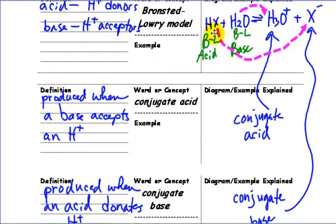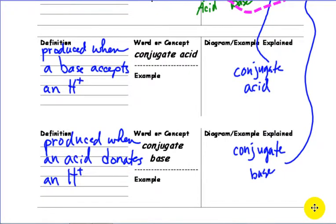Conjugate base, it's something that's produced when an acid lost an H plus, or thinking about it going in reverse, it behaves like a base. It accepts a hydrogen.